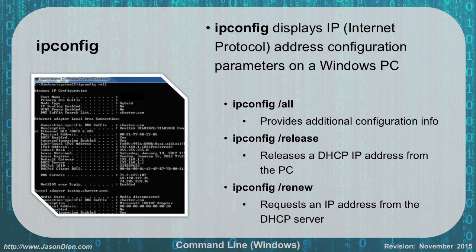ipconfig /release drops your current DHCP address — useful when you're not getting a good connection or you've pulled a 169.254 address. It will blank out your network card. Follow that up with ipconfig /renew, which requests a new DHCP address from the server. You'll go through the DORA process again: Discover, Offer, Request, and Acknowledge.